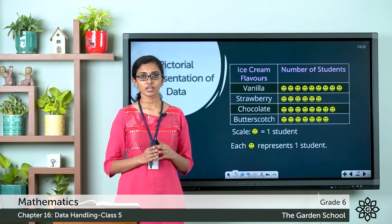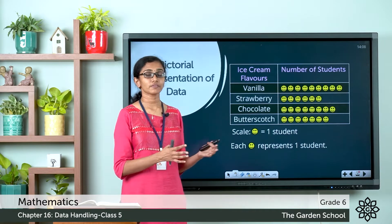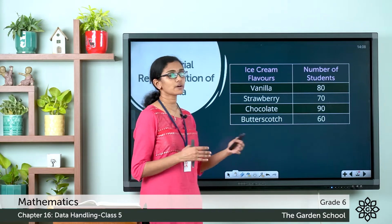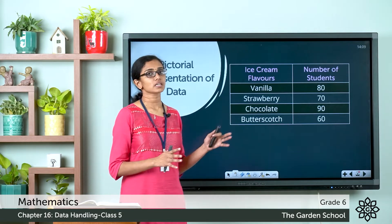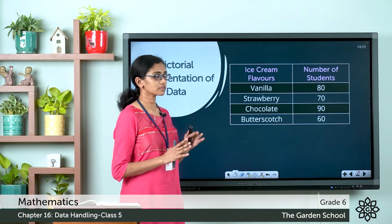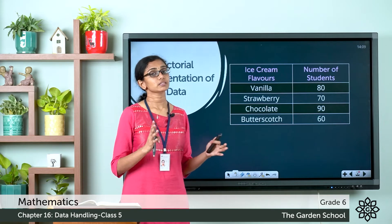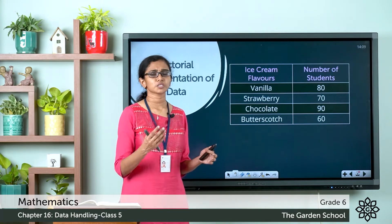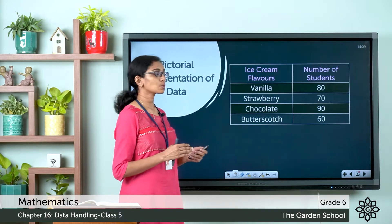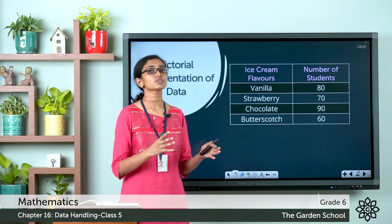This data was collected from 30 students. Now, what if the data was collected from 300 students? Would it be easier to represent 300 students with one symbol per student? Let's see. Vanilla is liked by 80 students, strawberry by 70, chocolate by 90, and butterscotch by 60. Using one smiley per student would not be practical, so we need to choose a different scale and change the value that each symbol represents.